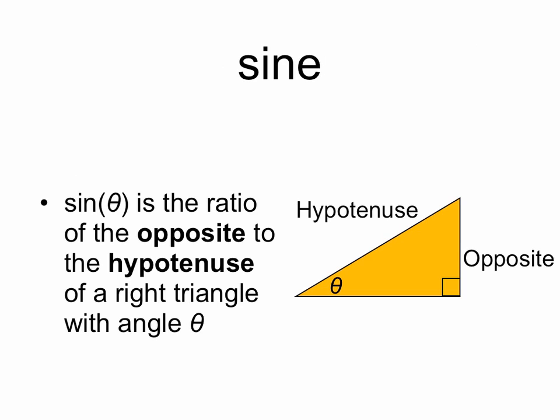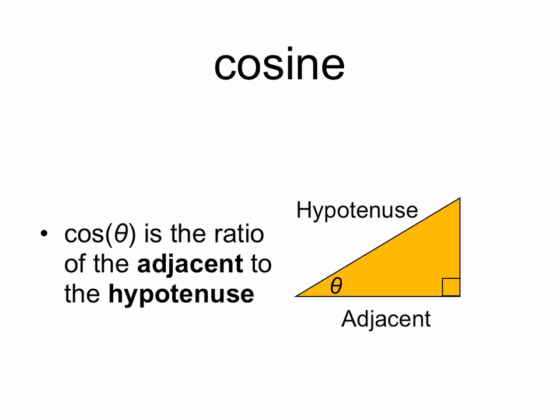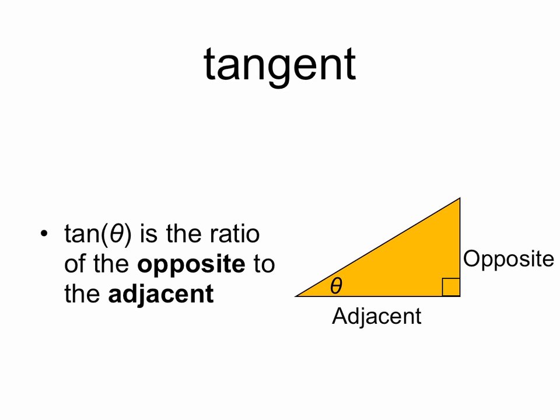So now we come to our definitions of sine, cosine, and tangent. Because these ratios are fixed given theta, we can define sine of theta as the ratio of the opposite to the hypotenuse. Cosine is similarly defined as the ratio of the adjacent to the hypotenuse. And tangent of theta is the ratio of the opposite to the adjacent.